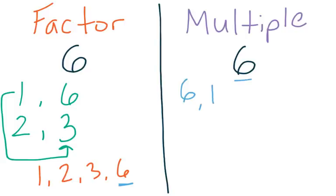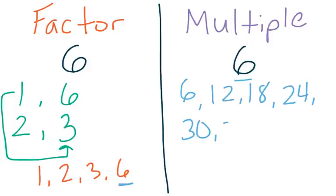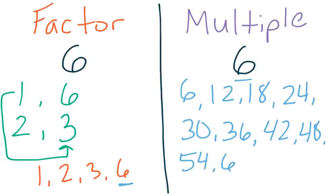6 times 1 is 6. 6 times 2 is 12. 6 times 3 is 18. 6 times 4 is 24. 6 times 5 is 30. Then 36, 42, 48, 54, 60 — and so on and so forth, we could keep going. These are multiples of 6. Notice how we're jumping by 6, so we're skip counting, or we're thinking about 6 times something, and that gives us a number. Those are our multiples.